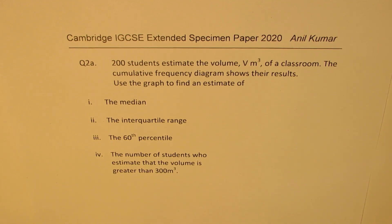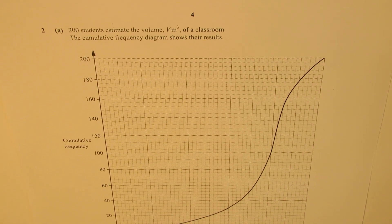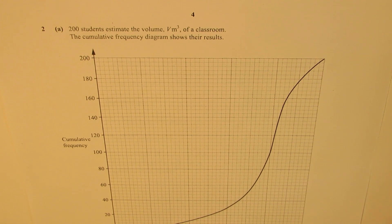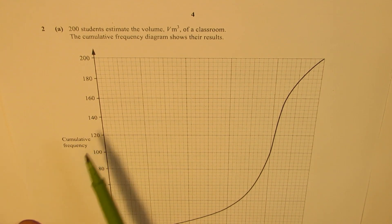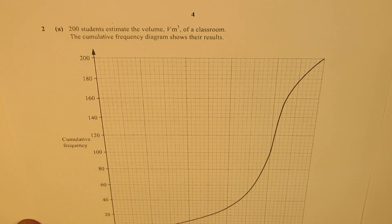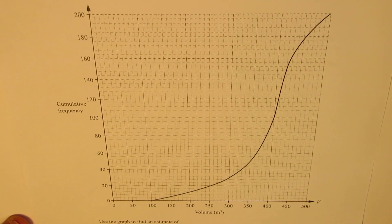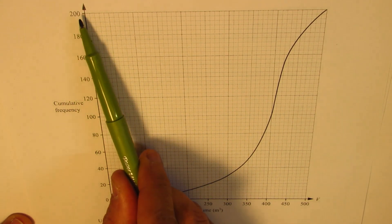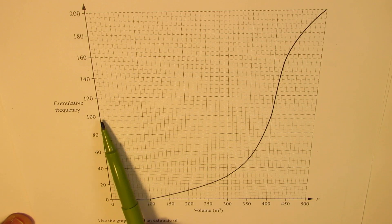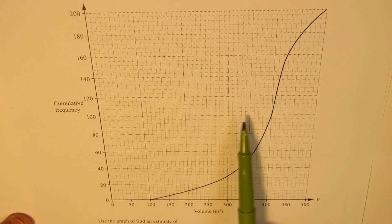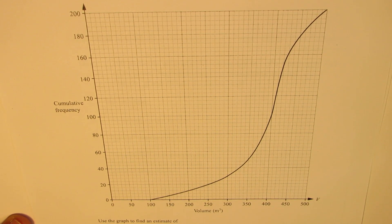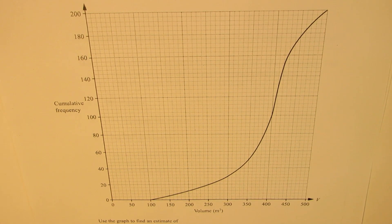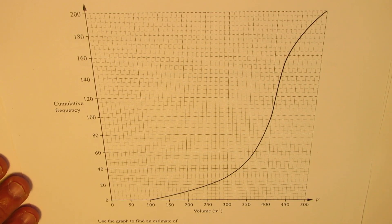If you analyze the graph, the S-curve which you see for the cumulative frequency — you have to read all the values very accurately from this curve. Cumulative frequency gives you the student number, and on the horizontal axis you have the volume. The median is the center value, and since there are 200 students, we have to read what corresponds to the 100th value. That is how we read and answer the questions. Let us see how to read the median from the graph first.